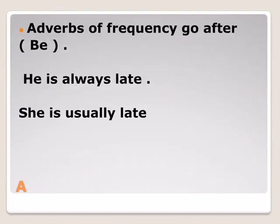There are a lot of positions we are going to learn about for adverbs of frequency. When we have the verb 'to be', you are going to put the adverb after it. If we have a verb 'to be' in the sentence, adverbs of frequency come after it. For example: 'He is always late.' 'She is usually late.'